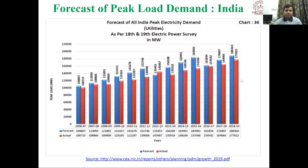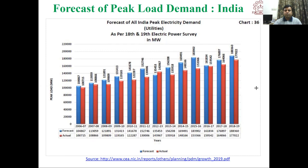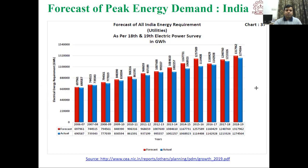Looking at peak load demand forecasting from 2006 to 2019: in 2006, the forecasted peak load demand was 104,867 MW, but actual demand was approximately 100 GW. By 2018–19, forecasted peak demand was 188 GW, but the actual was 177 GW. This forecasting data is important for planning power generation, transmission, and distribution to meet India's growing load demand.